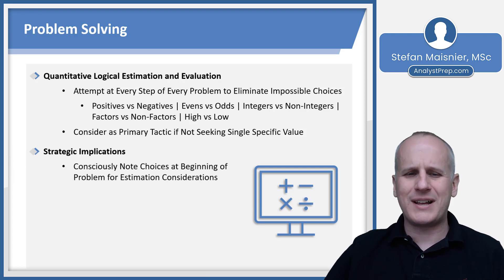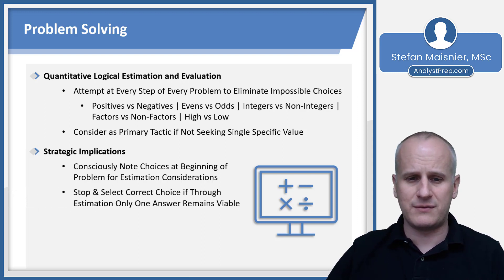Strategically, you want to consciously note the choices at the beginning of the problem for possible estimation considerations. Are some of the choices integers? Are some of them not? Are some of them positive? Are some of them negative? Are some of them high? Are some of them low? You just want to take stock of all of these things, and this is why we always start by writing out the answer choices if they're simple numbers.